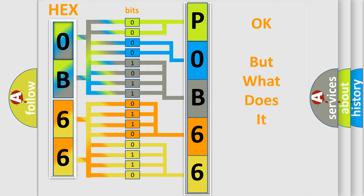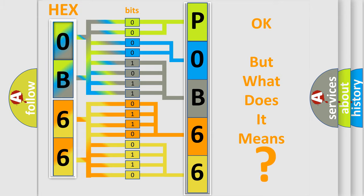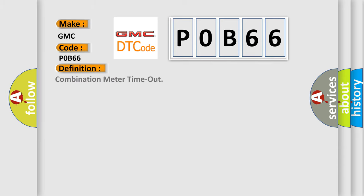The number itself does not make sense to us if we cannot assign information about what it actually expresses. So, what does the Diagnostic Trouble Code P0B66 interpret specifically for GMC car manufacturers? The basic definition is: Combination Meter Time Out.